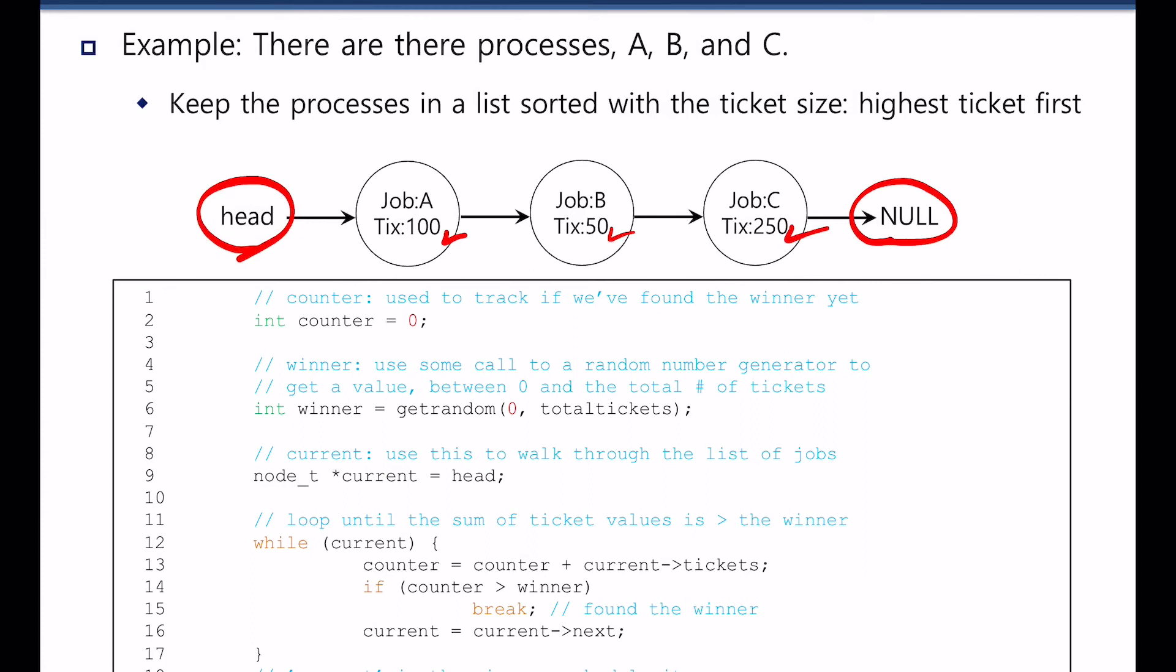The order in which the processes are listed in this linked list affects a great deal of the system performance because it takes more time to scan the number of processes. The number of processes it has to scan until it finds a winning process critically affects the overall CPU scheduling performance.